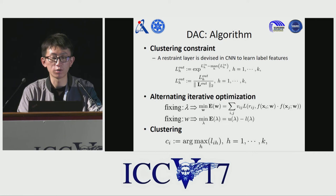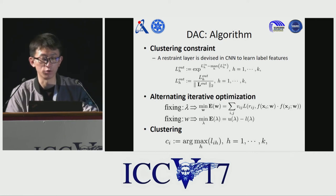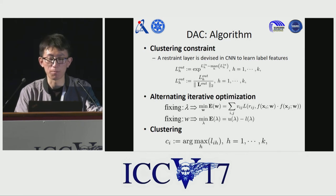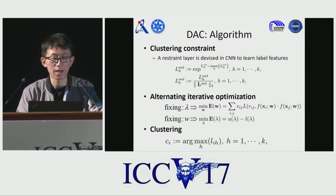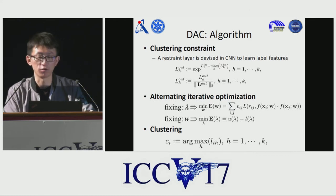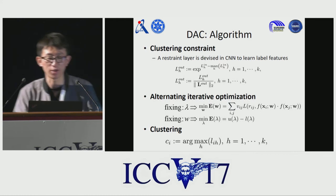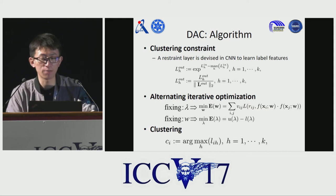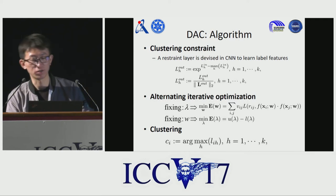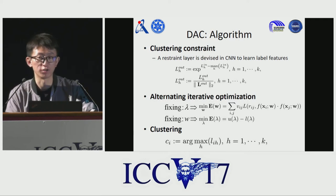We developed a deep network model to learn label features. The optimization of W and lambda are performed alternately. Once lambda is fixed, the DAC model can be trained using backpropagation. When W is fixed, we can adjust lambda to select pairwise samples to train the DAC model. In the end, samples are classified by looking at the largest response of the label features.